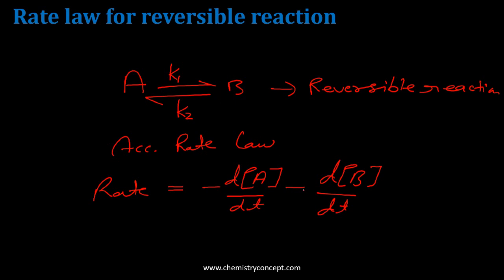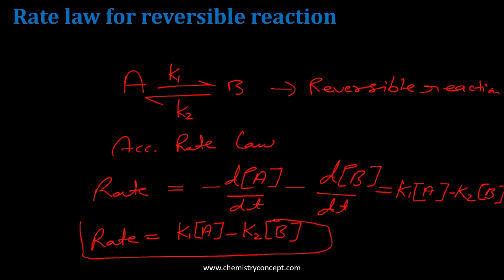And that is, this term is equal to K1 times the concentration of A minus K2 times the concentration of B. So the rate is K1[A] minus K2[B]. So this is the overall rate for a reversible reaction in chemical kinetics.